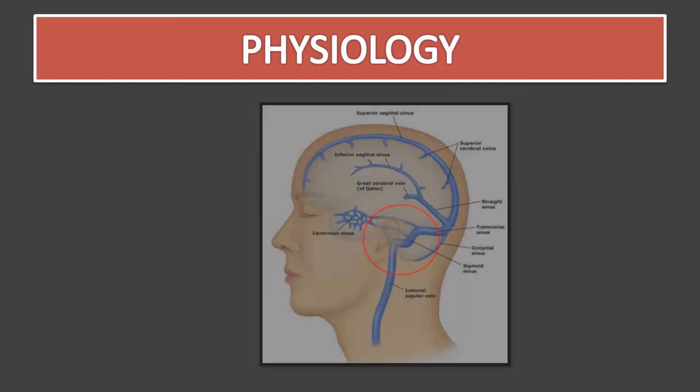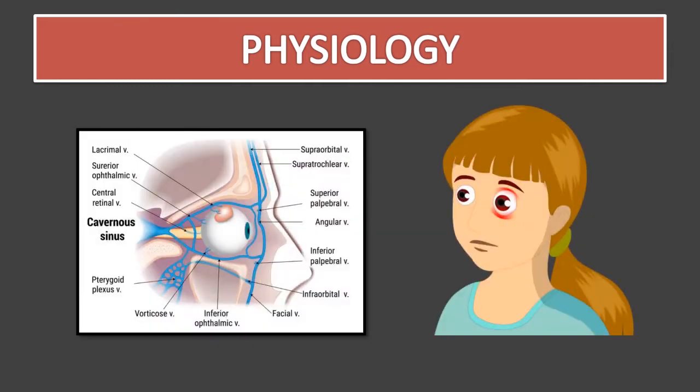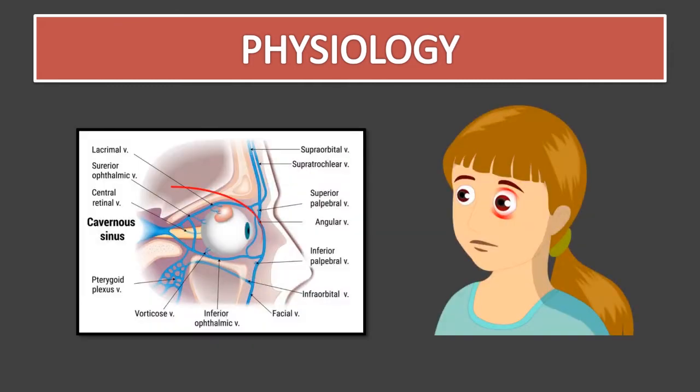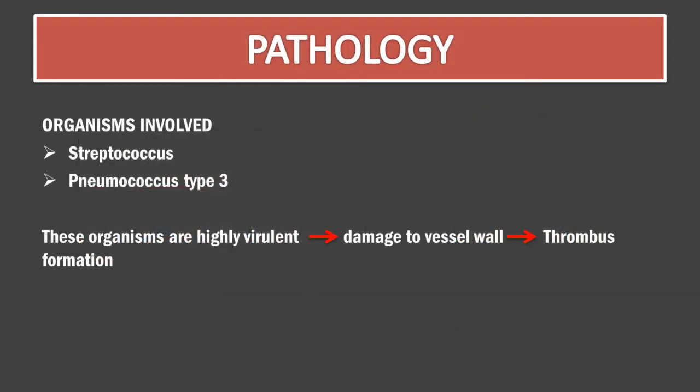On the other hand, the cavernous sinus is closely related to the eye. So any deep-seated eye infection like orbital cellulitis or abscess will cause cavernous sinus thrombosis. This is the basis of pathology in these diseases.